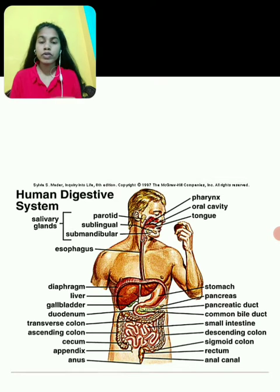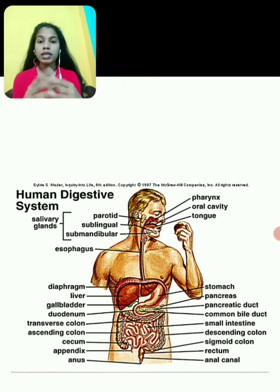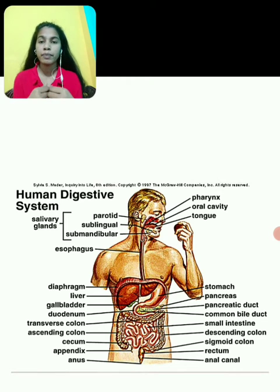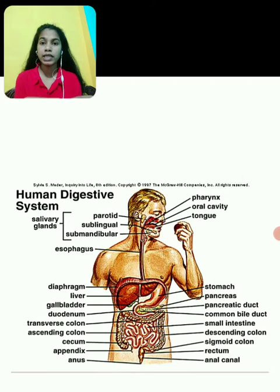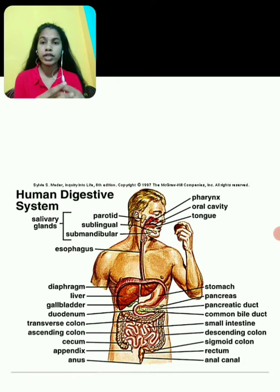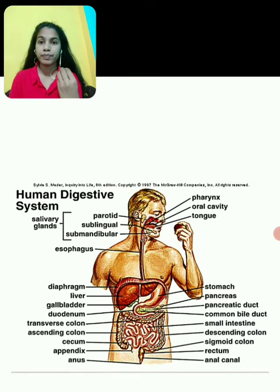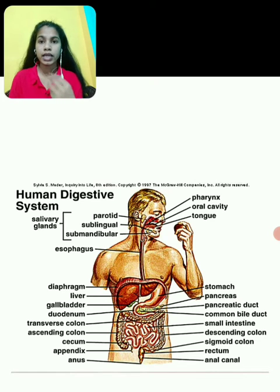First of all, I would like to discuss about the alimentary canal. What is the alimentary canal? The alimentary canal is basically a long tube of varying diameter. It is called complete in humans and incomplete in some invertebrates.